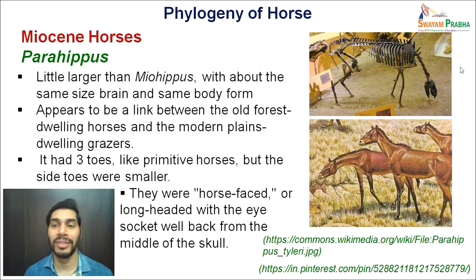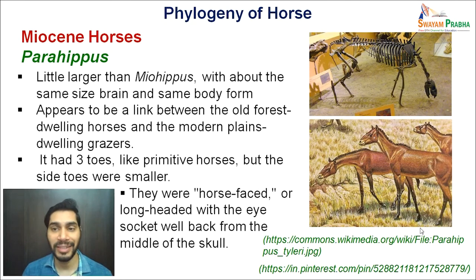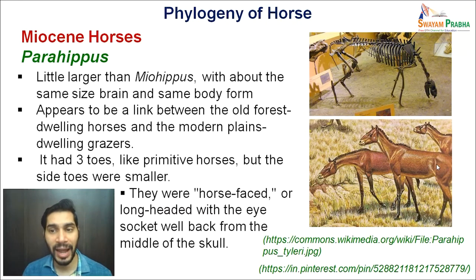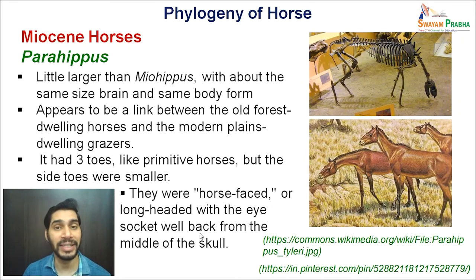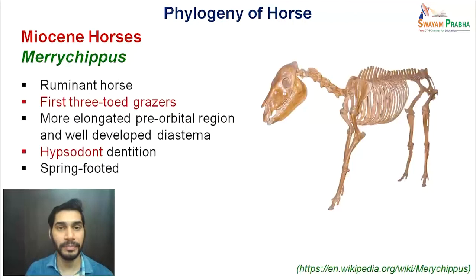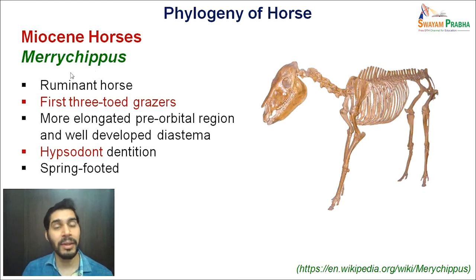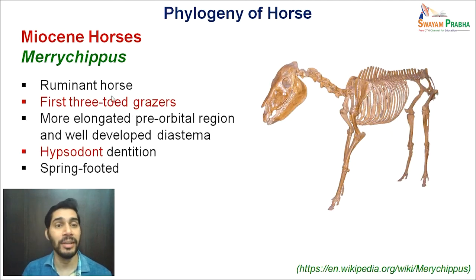Here is the fossil of Parahippus, and based on this, a redrawn image shows it looks more like a horse — with a horse-like head, a much larger body similar to modern horses — and that is why it is called the intermediate or linking form between the earlier and more recent forms. The next form is called Merychippus, also known as the ruminant horse.